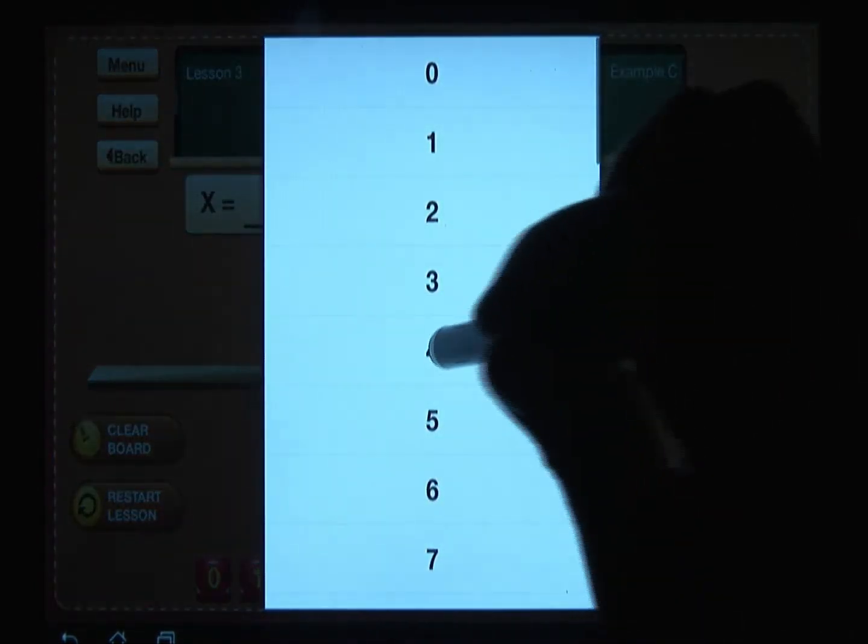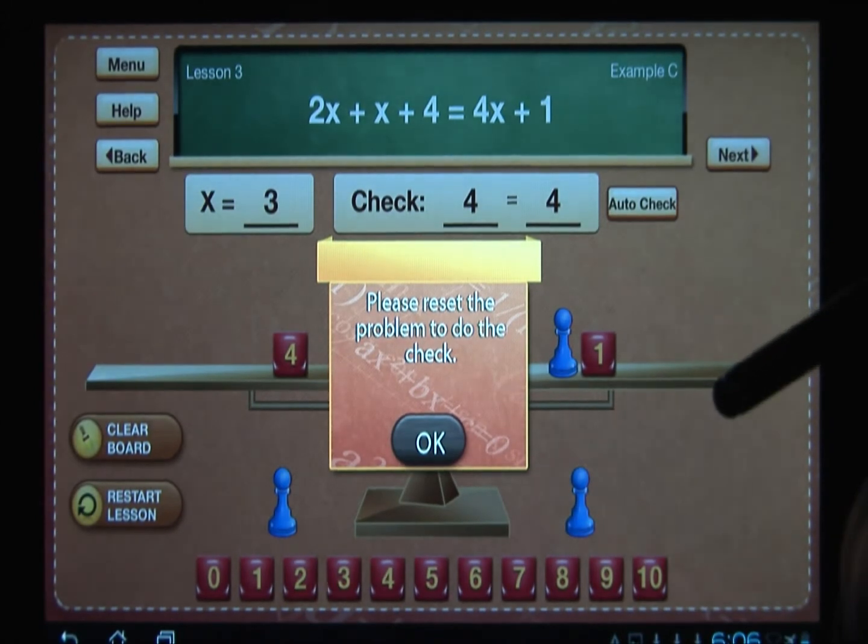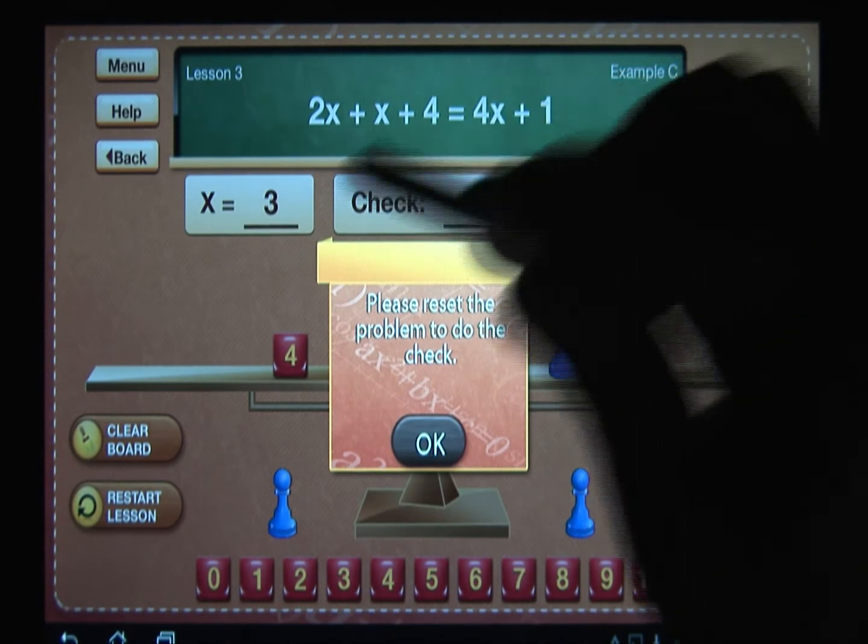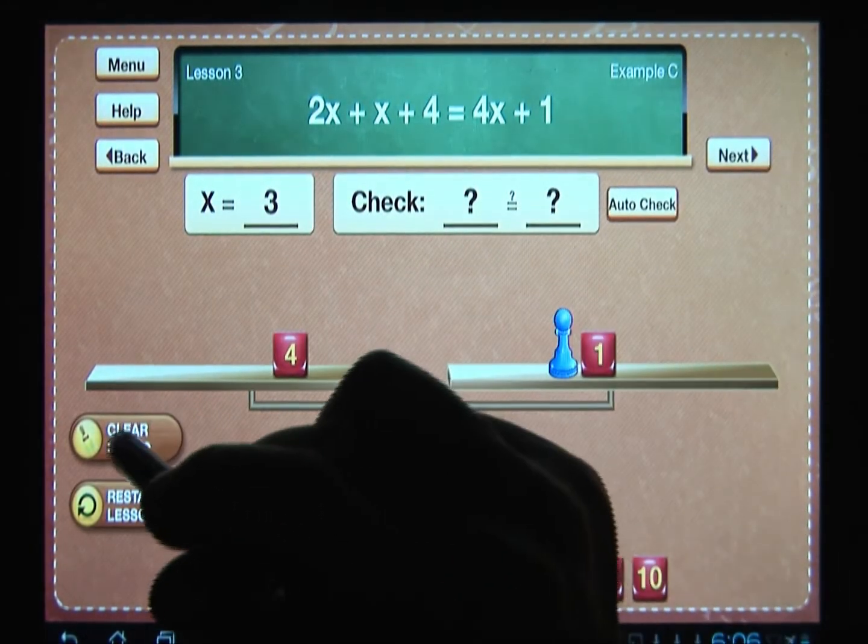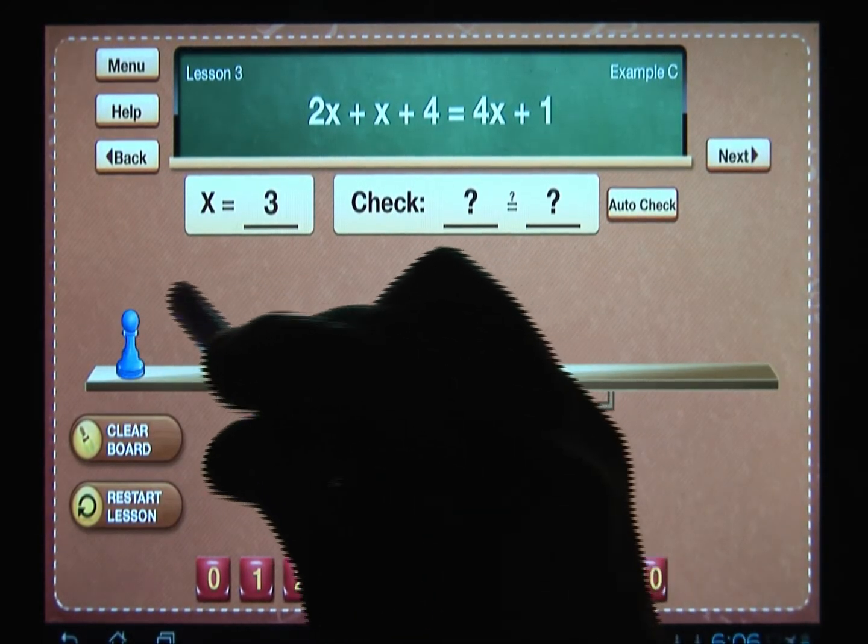So four does equal four, but notice you get a pop-up that says reset the problem to do the check, because four is not the check to this original problem when x is three. So what we do then is we clear the board and we set up the problem one more time.